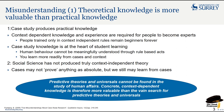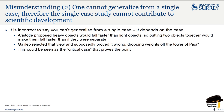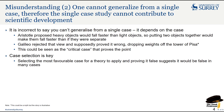The second misunderstanding is that one cannot generalise from a single case, and therefore the single case study cannot contribute to scientific development. This is incorrect because it depends on the case. Aristotle proposed that heavy objects fall faster than light objects, so putting two objects of the same weight together would make them fall faster than if separated. Galileo rejected that view and supposedly proved it wrong by dropping weights off the Tower of Pisa — this could be seen as a critical case that proves the point. Case selection is key: selecting the most favourable case for a theory and proving it false would suggest it would be false in many cases.